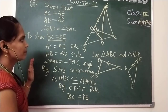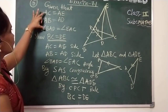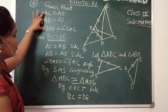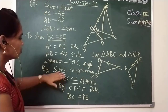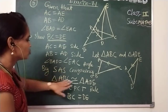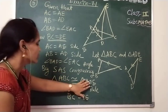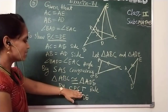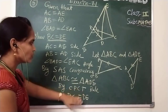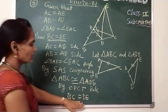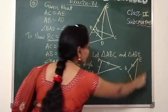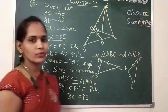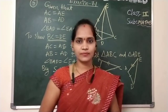Very simple. All the information is given in the question itself; we just need to show that these two triangles are congruent, and then by CPCT rule, BC equals DE. I hope you understood. Thank you.